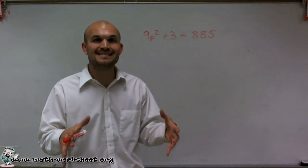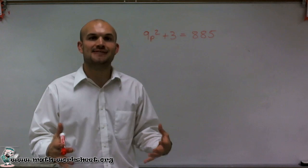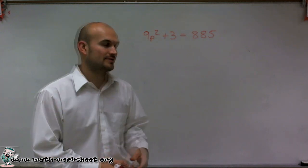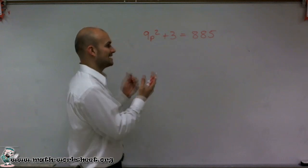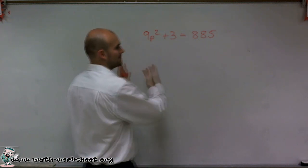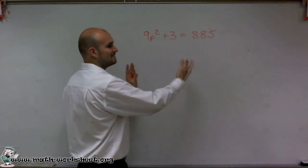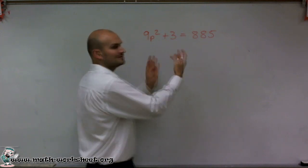Remember, solving for p means to isolate p, get it by itself so then we can find the value of it. Because right now p is a letter, we don't have a value for it. So if I can get p on one side of the equation and my numbers on the other side, then I can say the value of p is equal to these numbers.